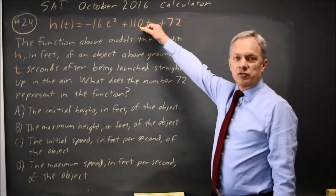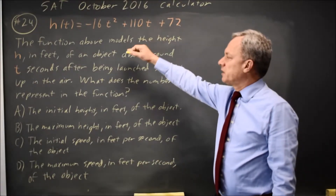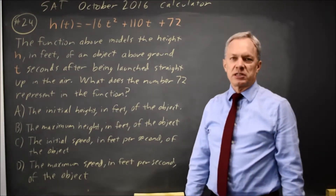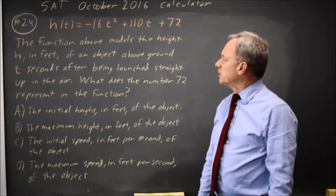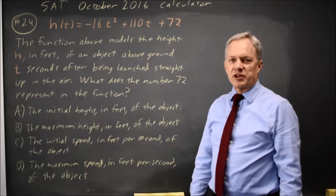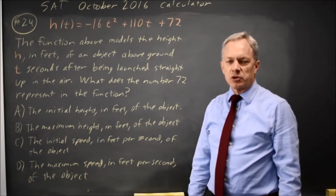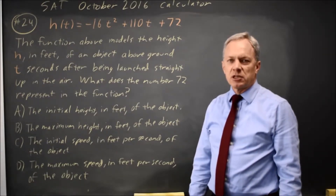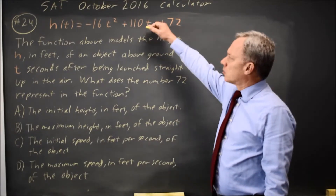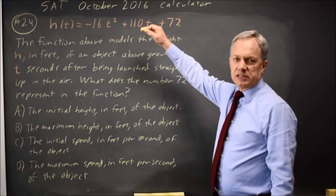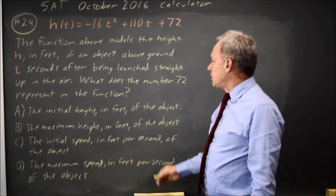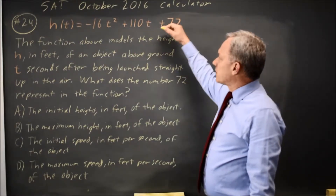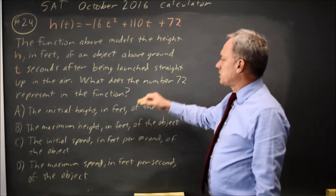College Board gives us an equation for a quadratic and asks for the meaning of the number 72 in this function. College Board often asks for the meaning of the slope or intercept of a linear equation, or for other constants in nonlinear equations. In this case, they're asking for the 72, which is the constant.